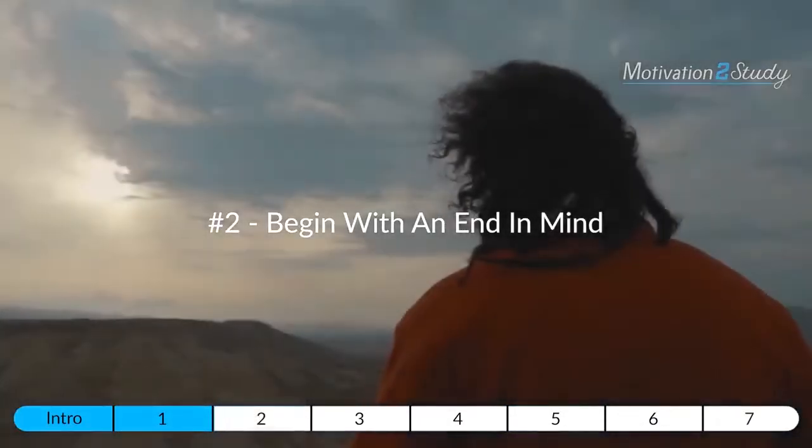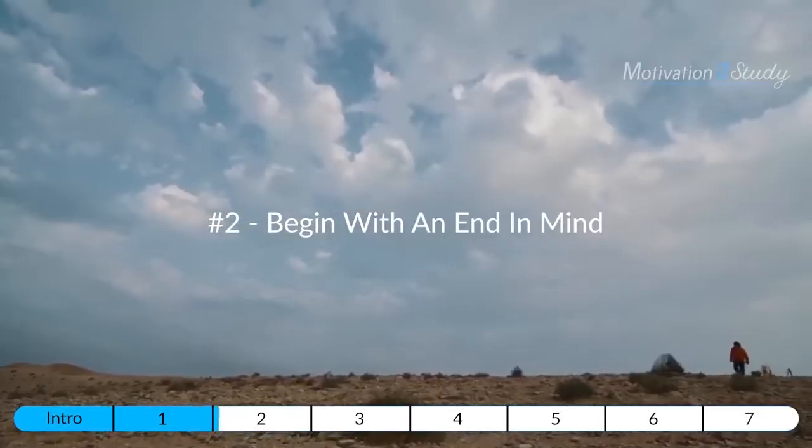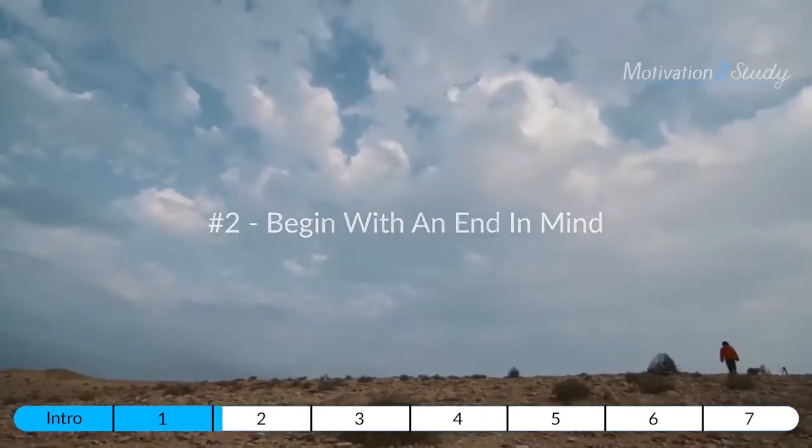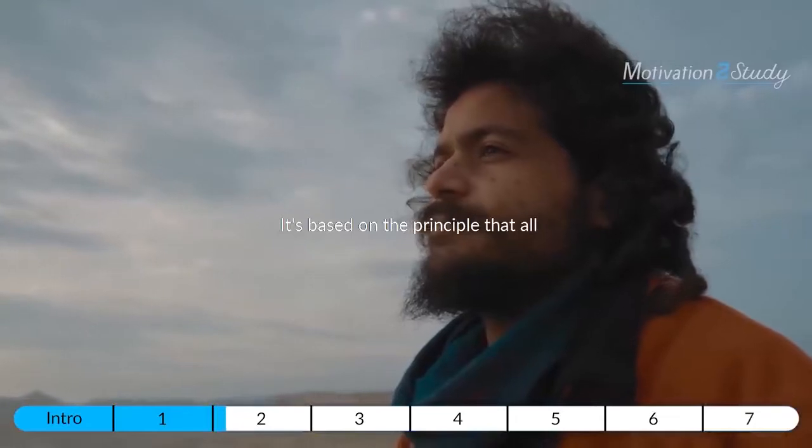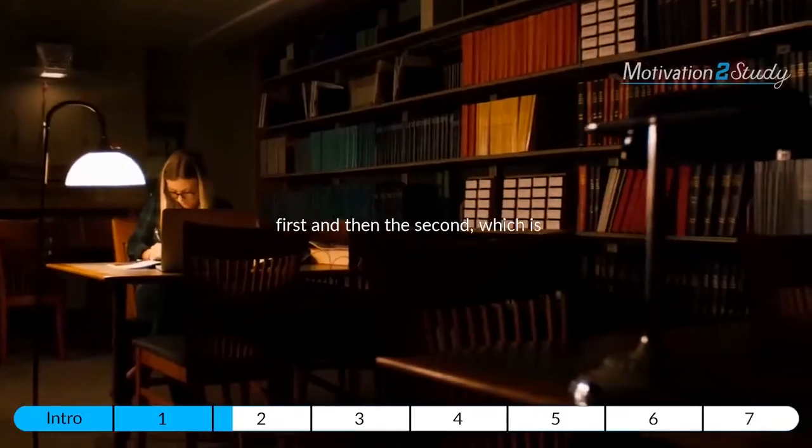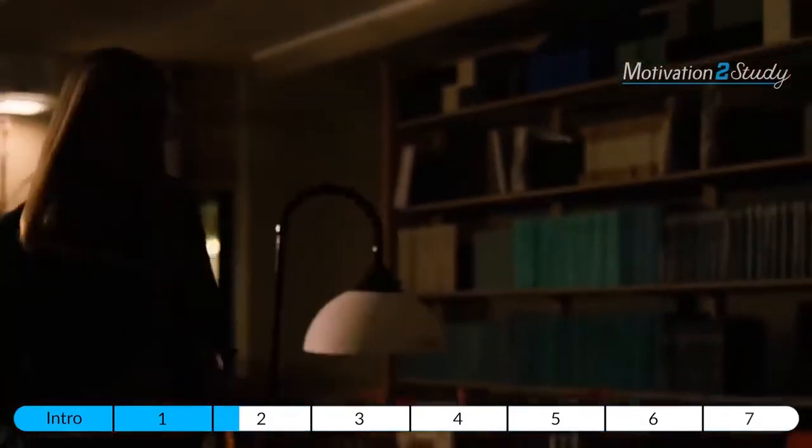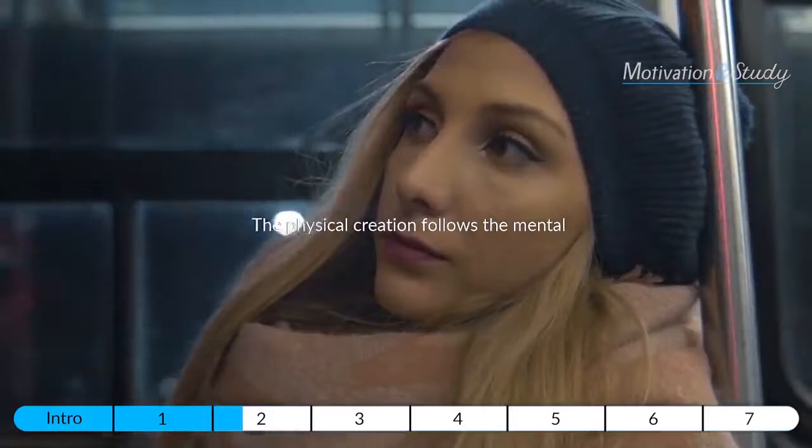Golden nugget number two is based on imagination—the ability to envision in your mind what you can't at present time see with your eyes. It's based on the principle that all things are created twice: there's the mental creation, which is first, and then the second, which is physical creation. The physical creation follows the mental, just as a building follows a blueprint.